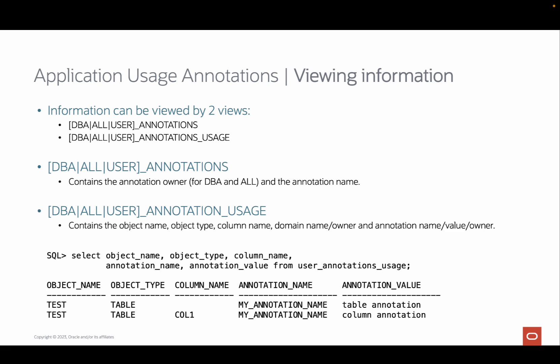Annotations can be queried with two new data dictionary views, prefixed by the usual DBA, ALL, and USER prefixes. The annotations view only lists the annotation names and, when DBA and ALL are used, the owners of the annotations. Be aware that if you use the same annotation name for two or more object-type-column combinations — like in our example, both at column level and at table level — only one entry will be visible in this view. It therefore only lists the distinct annotation names, and if applicable the owners, that are used. Use this view to make sure an annotation name you plan on using is not already taken, or to see which annotation names are already in use.